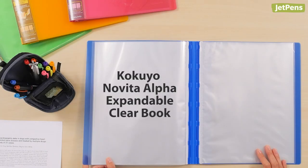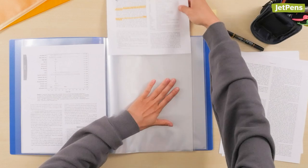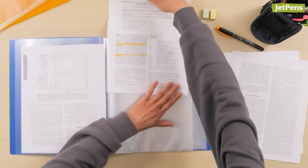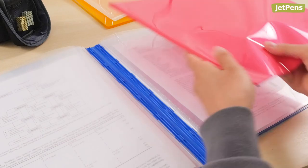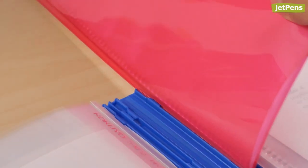The Kokuyo Novita is an innovative organizational system that uses document holders called files. These holders are held in a binder cover called a clear book. Simply slide the files into the grooves to store them securely inside the cover.